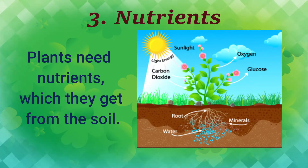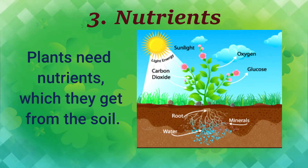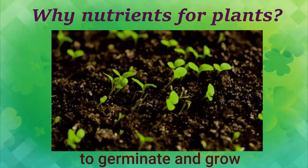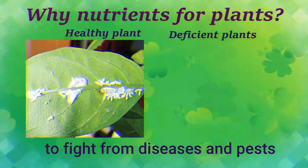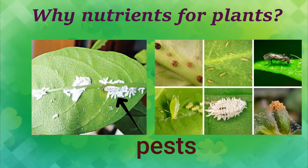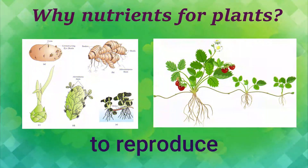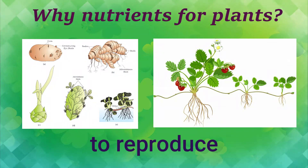Plants need nutrients, which they get from the soil. They need nutrients to germinate, to grow, to fight diseases and pests, and to reproduce. If the plant gets all the nutrients in the proper amount, the plant will be healthy.